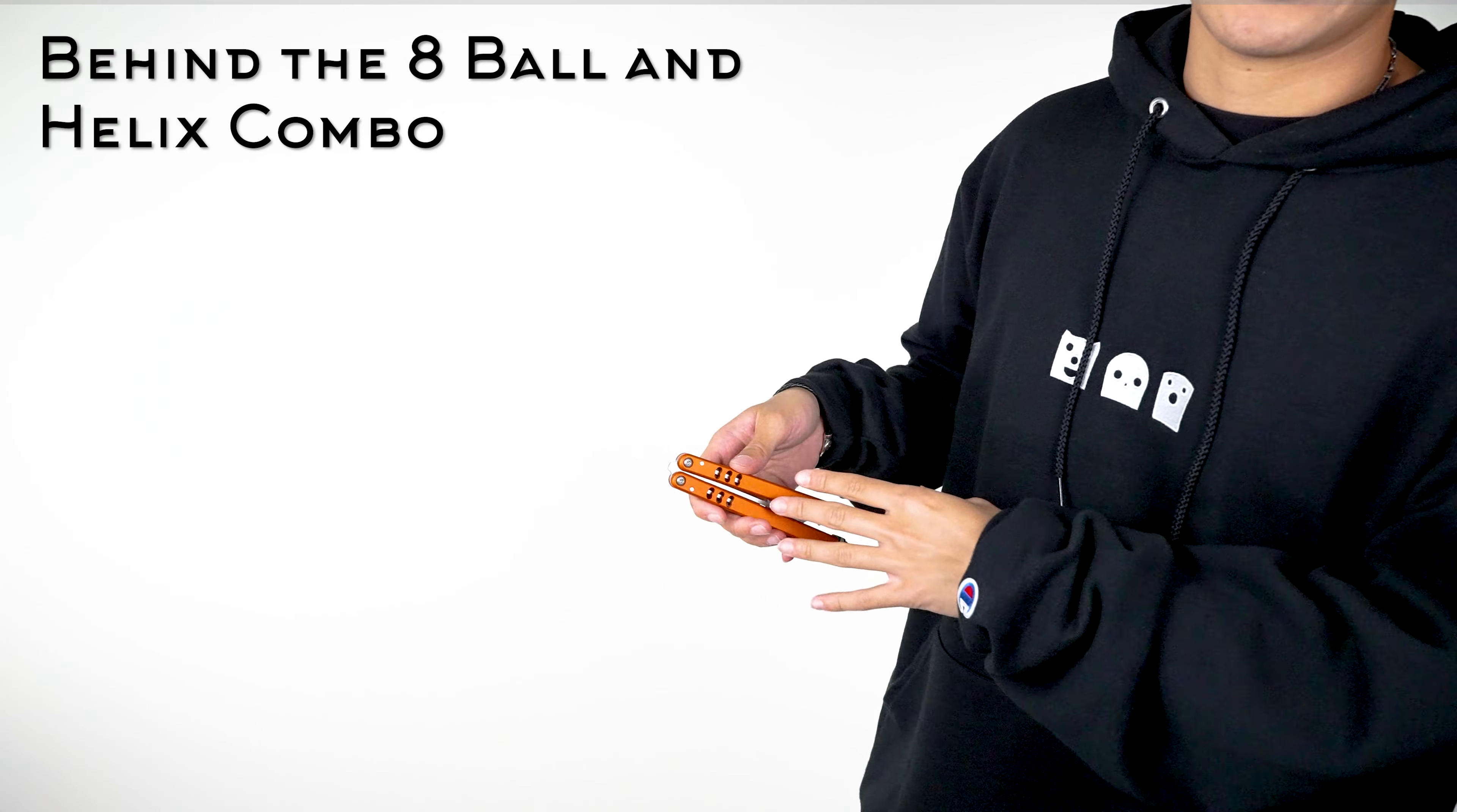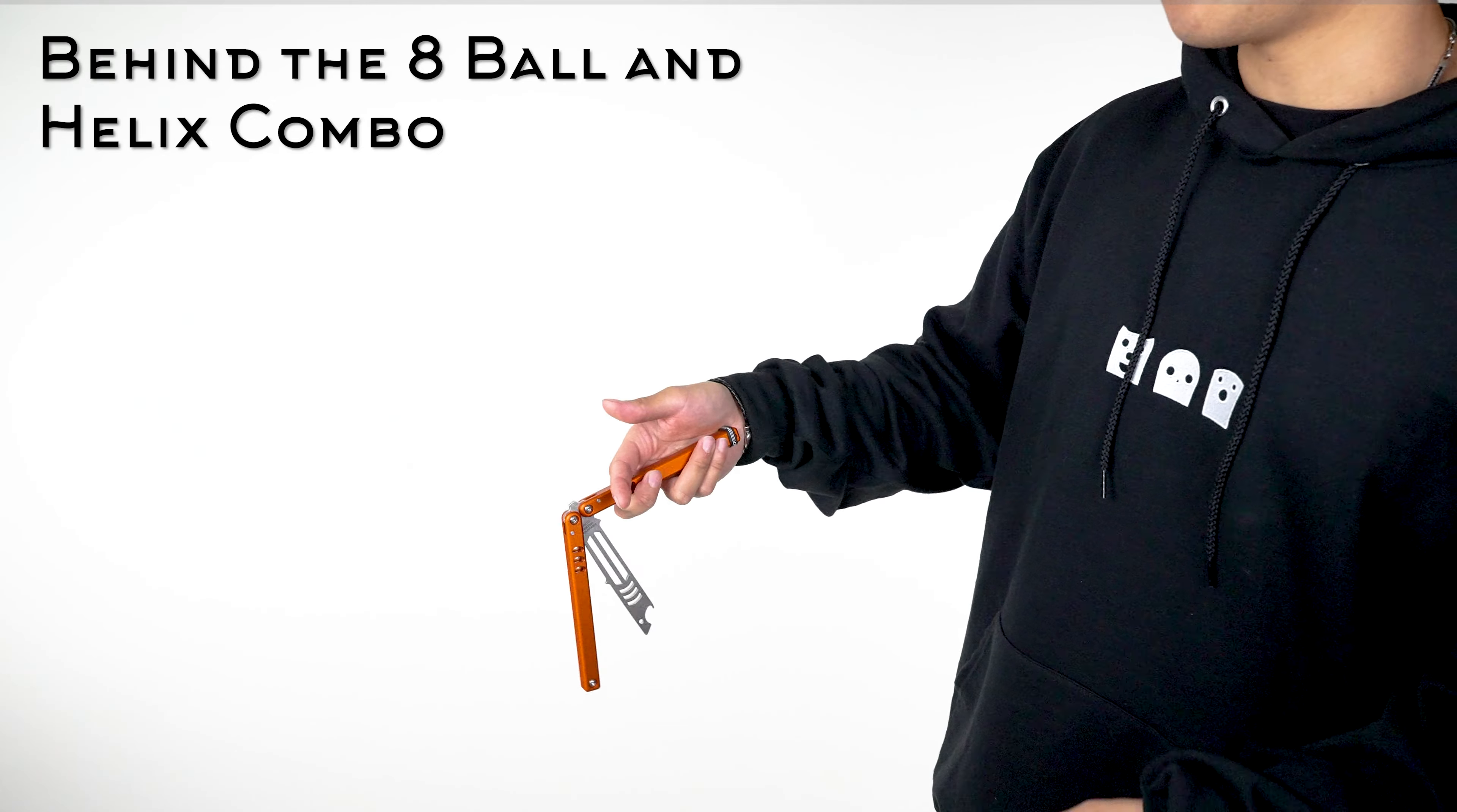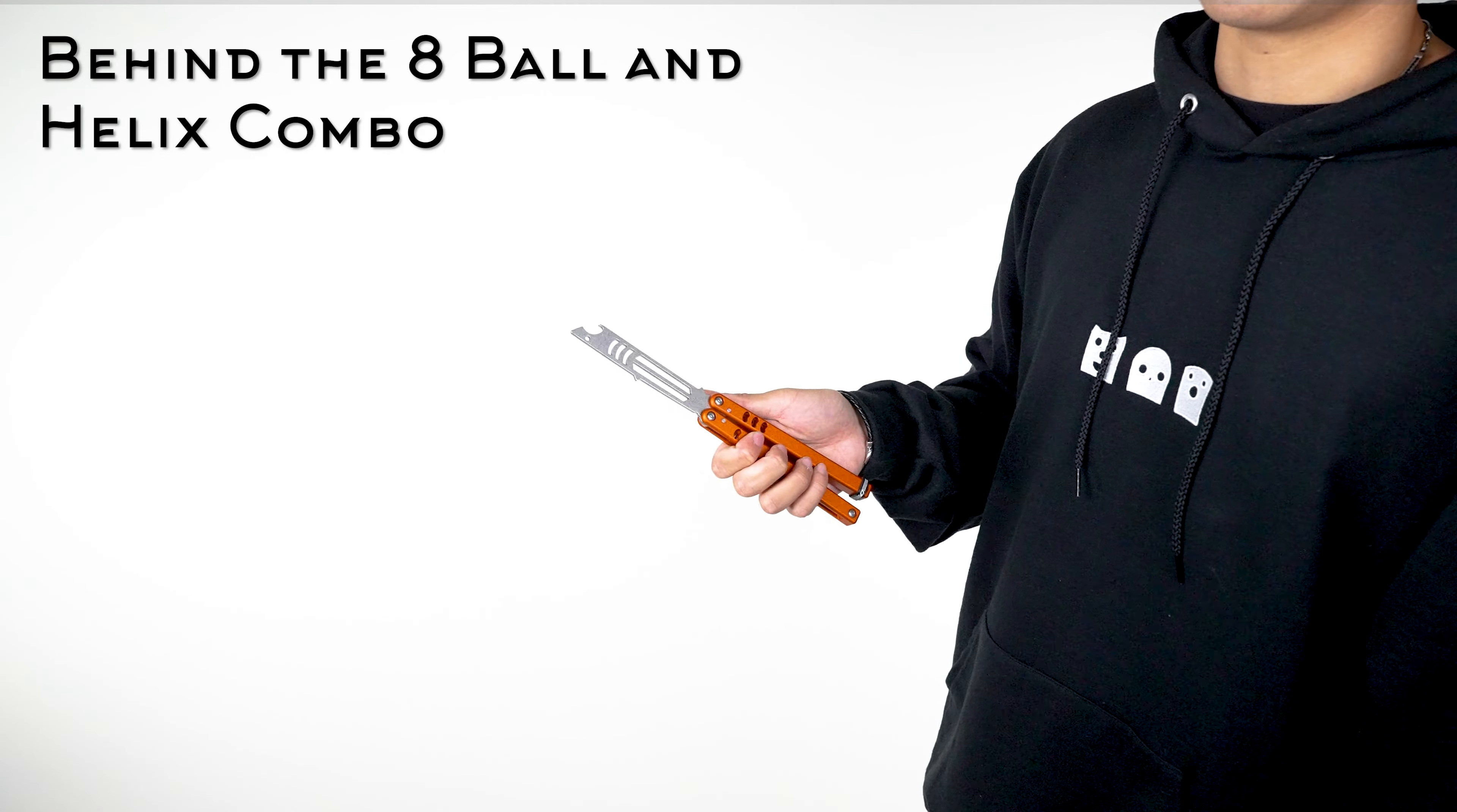You can combine the eight ball and the helix very easily. So if you do an eight ball like this you end on the bite handle and you can do a helix from the bite handle. So just do that helix and then you catch the safe handle. You can do a chaplain from there, get into a twirl or just end off the combo like that.